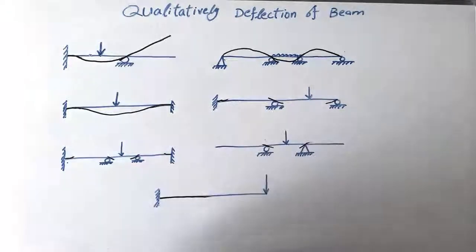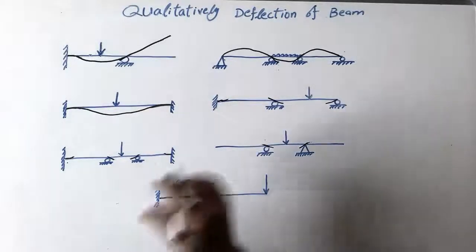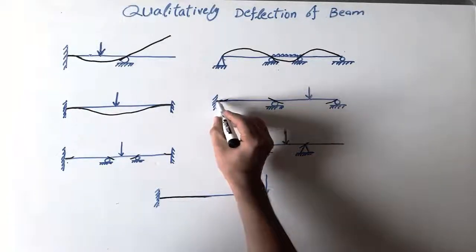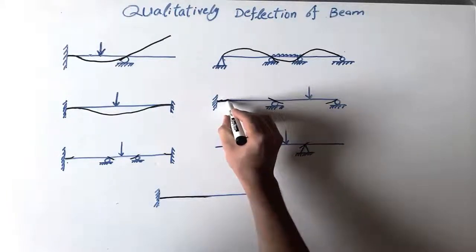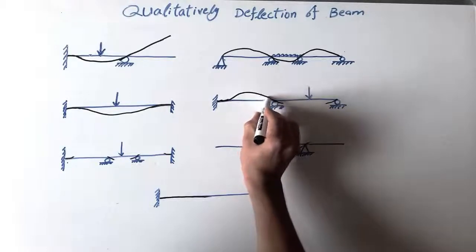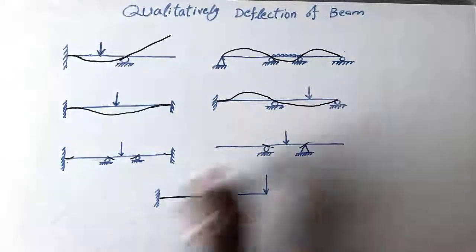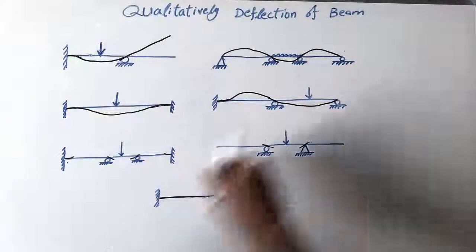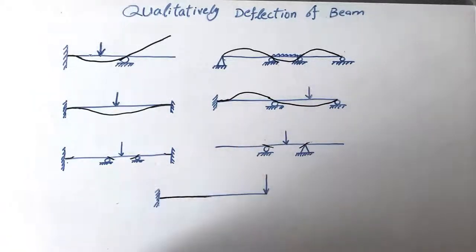Fourth type of beam: one side is fixed and the other side has a roller support, and we also have a point load. How would the deflection shape look? It will go slightly straight, then make a curve upwards, then go down, and end at the roller support — the curve is due to the point load.